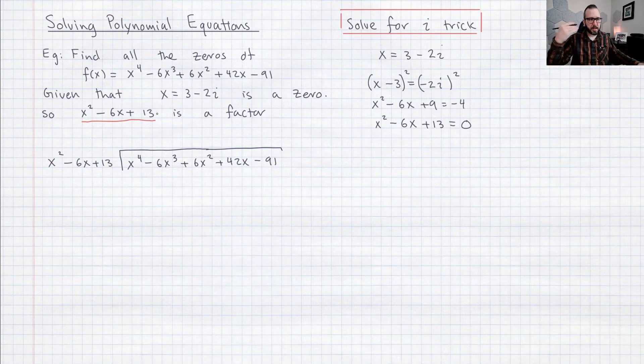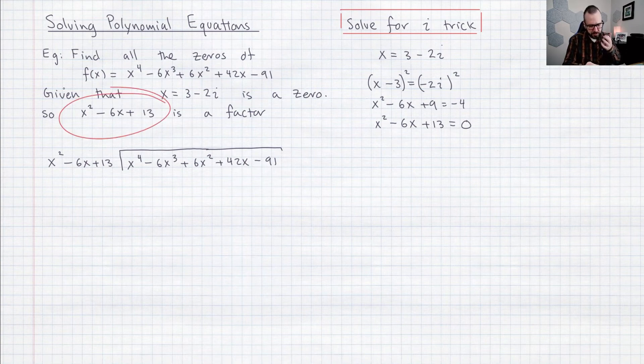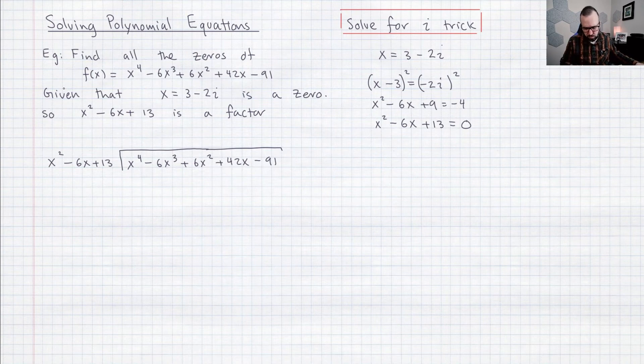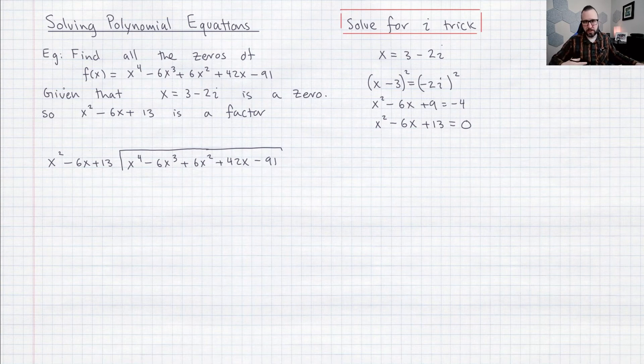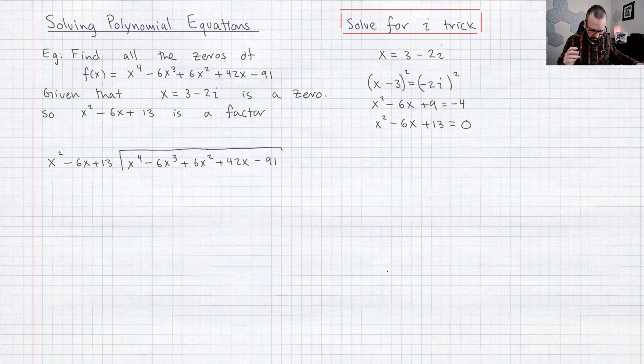I can't use synthetic division anymore because this isn't just like a nice simple linear polynomial but it's no big deal I can just use long division so I'm just repeating the process here. I've got one of the factors so I'm just going to divide out by that factor and then start working with the quotient. All right so let me just crank out this long division this is going to be fun.